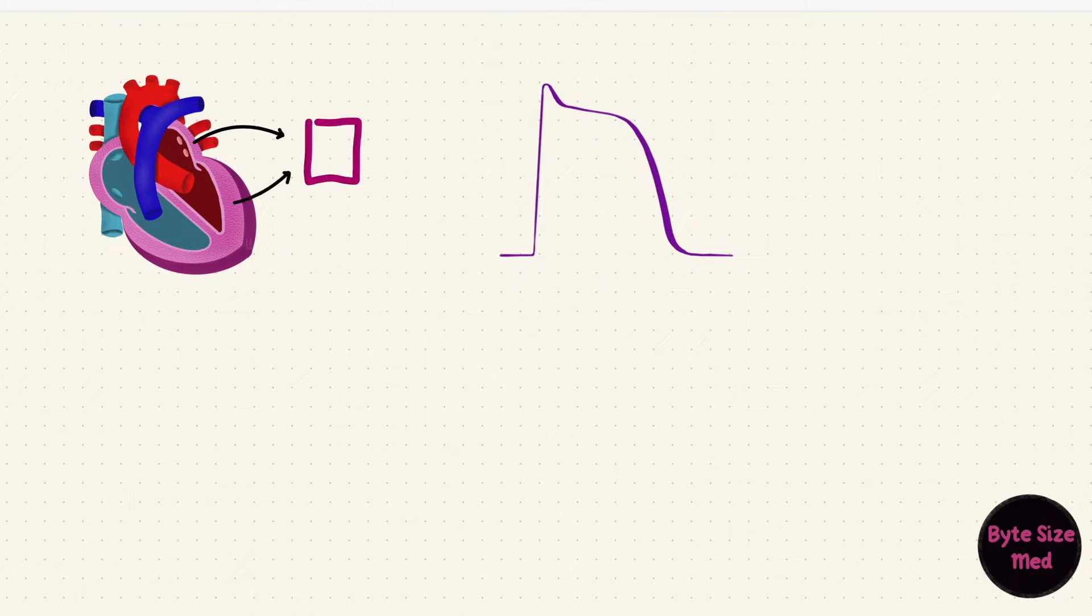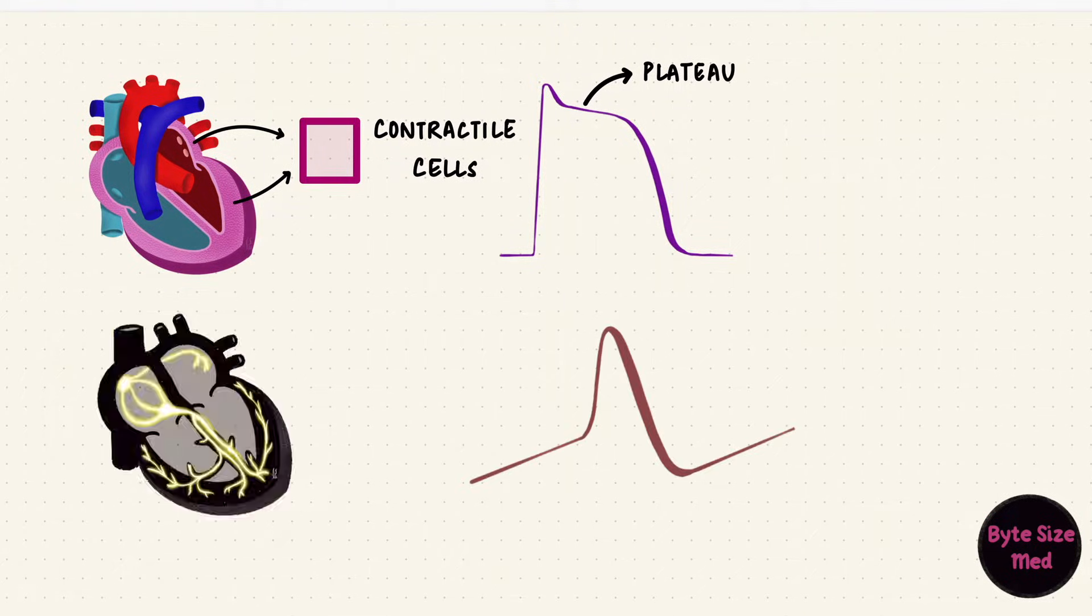One is in the muscles of the atria and the ventricles where they've got this plateau. The length of this plateau would be shorter in the atria. The other is in the pacemaker of the heart, that's the sinoatrial node.